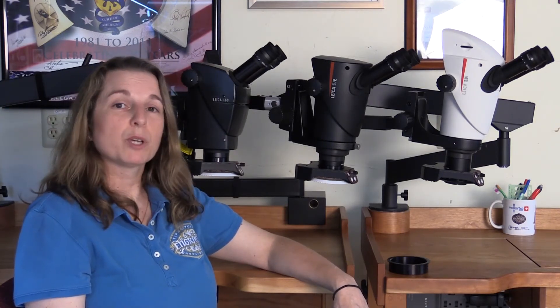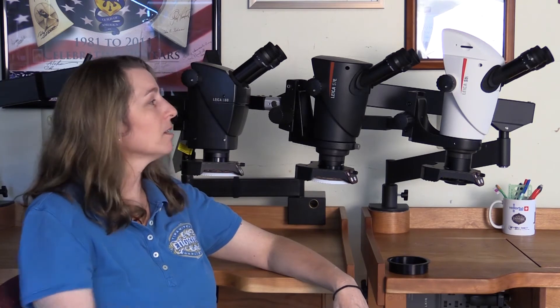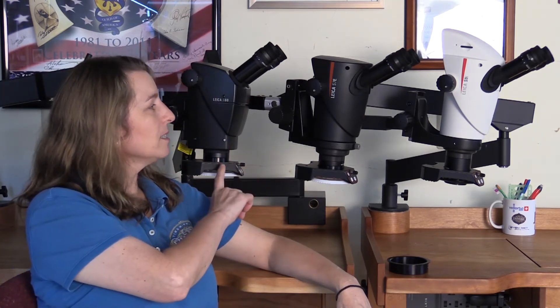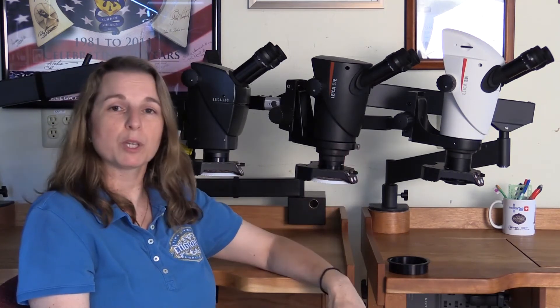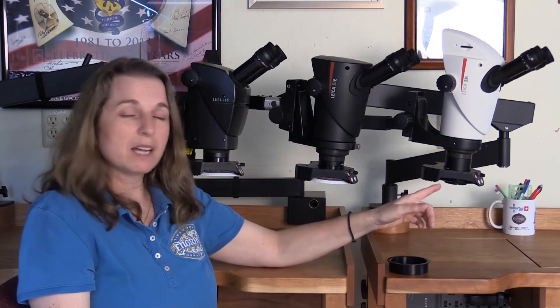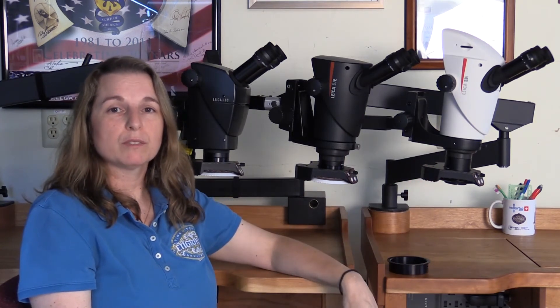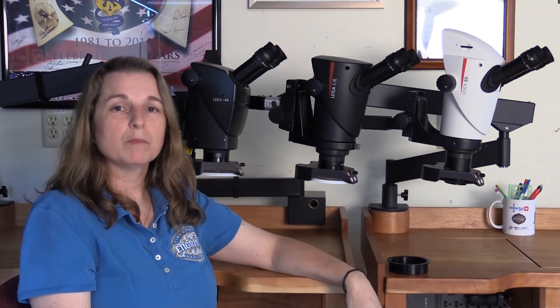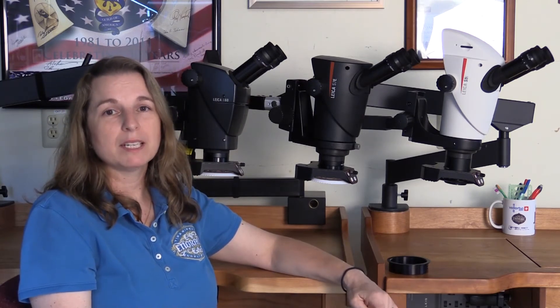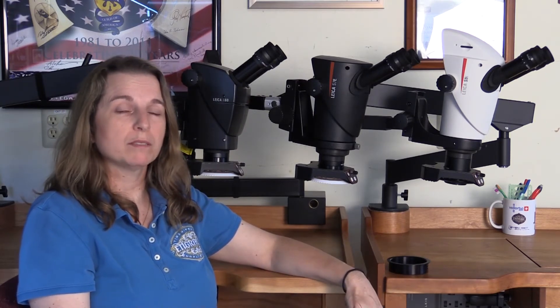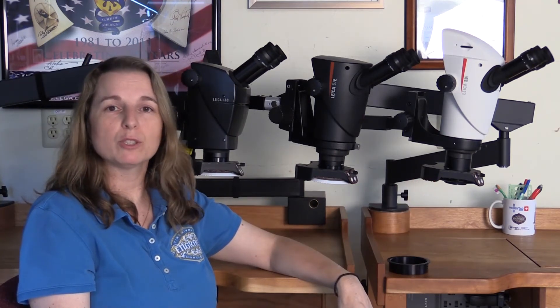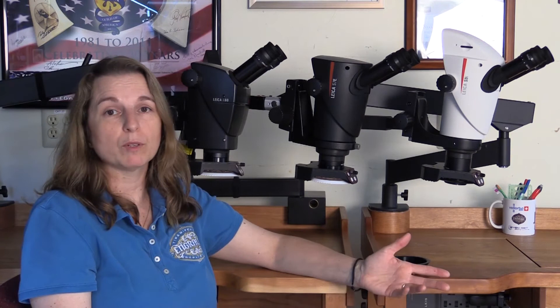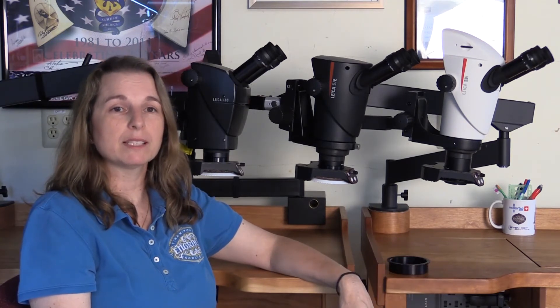The way that these microscopes come: the A60 and the S7 only come in a binocular model, which is the basic stereo zoom microscope. The S9 has three different versions. You can get a stereo zoom, you can get a trinocular that has the camera on board, that's called the S9i, and you can get a trinocular that has a documentation tube so you can put your own camera or devices on it, that one's called the S9d.